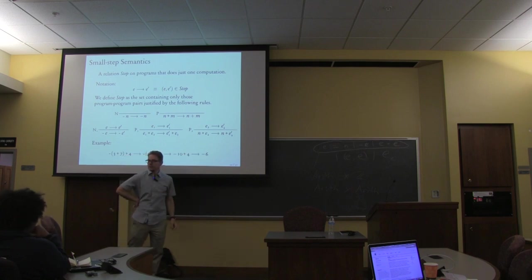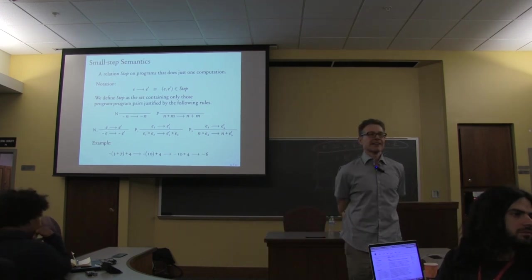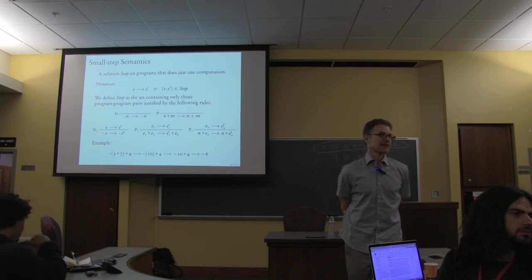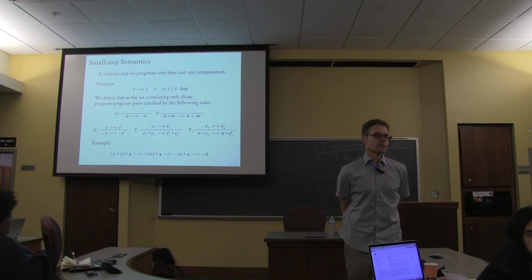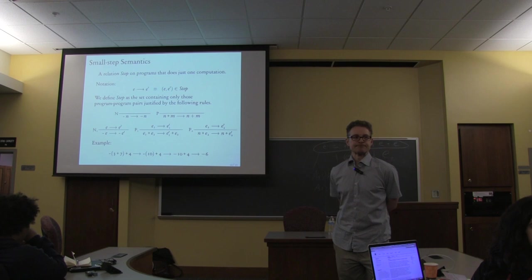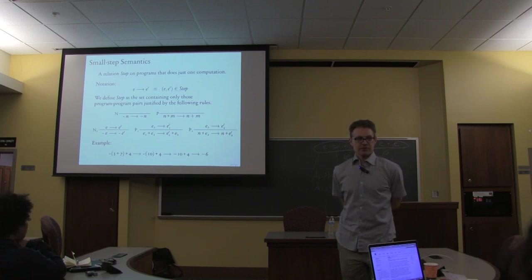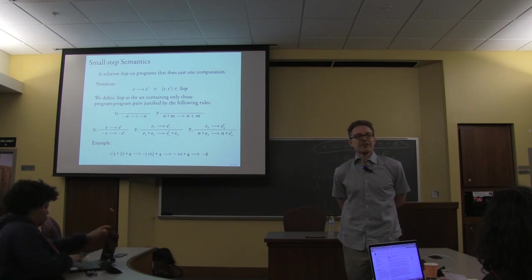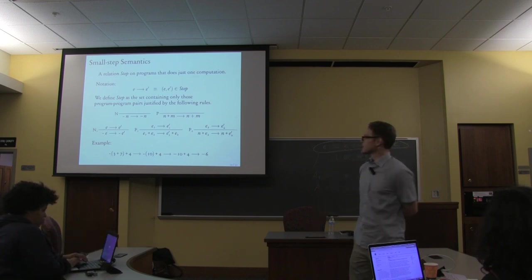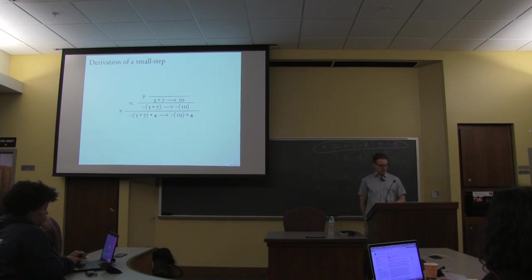You mentioned forcing an evaluation order — in lambda calculus you can use two different rules to express that, yes. You can absolutely use that to control evaluation order. For call-by-value, in the beta rule instead of having the argument be any old expression, you'd require the argument to be a value and have a grammar for your values. Let's look at the derivation — here is the derivation of just that very first step.